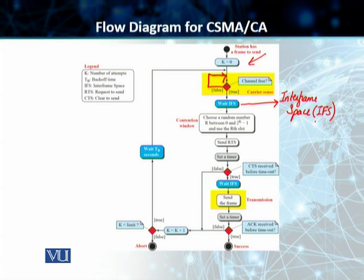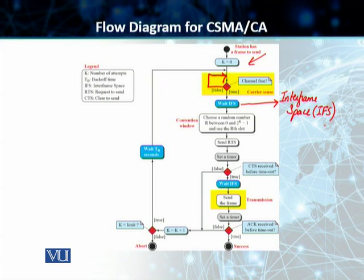This Interframe Space allows us to further avoid collisions because it allows a distant station — a different station that may have already started transmission — for that station's frame to reach the destination before every other station starts transmitting. So after the IFS, the system checks the medium again, and if it still finds the medium idle, it starts the transmission.